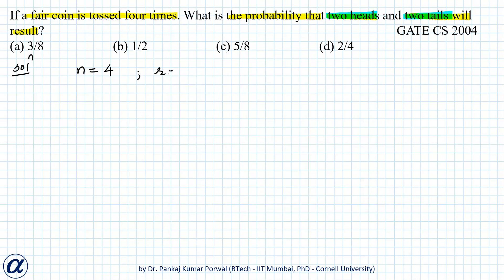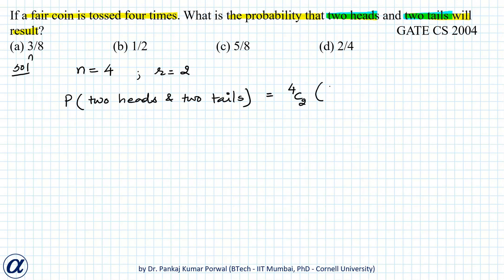So r is 2, and the probability of getting two heads and two tails equals 4C2 multiplied by the probability of getting heads, which is one-half to the power of two (number of heads), multiplied by the probability of getting tails, which is one-half raised to the power of two (number of tails).